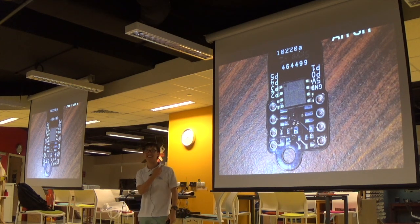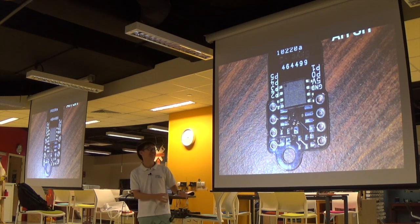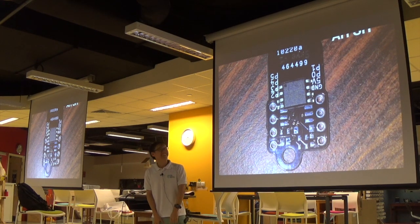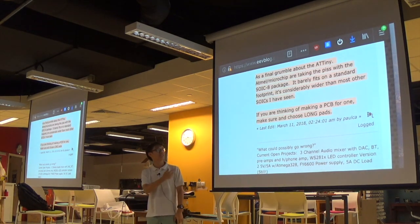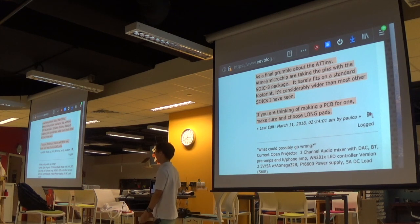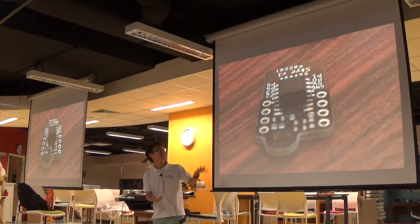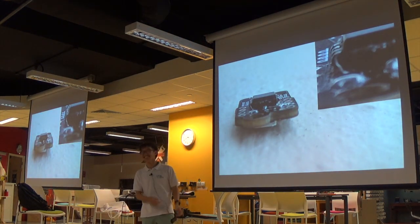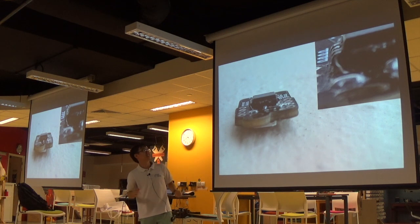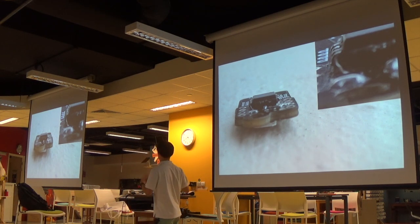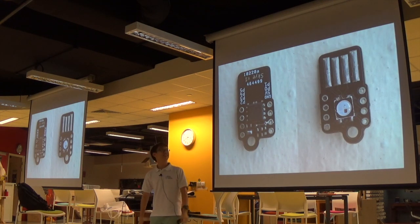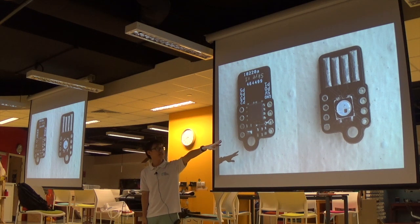Then I realized, when I placed the ATtiny85 on it, that it wasn't the typical package — it was an elongated version. I'd seen blog posts saying you need to make sure your pads are longer, but I thought, let's just make this work. I grabbed the pins at each end of the ATtiny85 with tweezers, bent them to flip over, soldered it on, and it looked perfect. I also soldered on the WS2812, and it works.